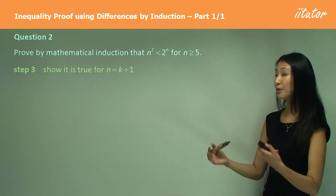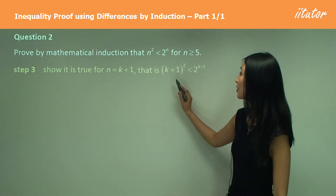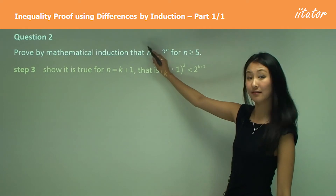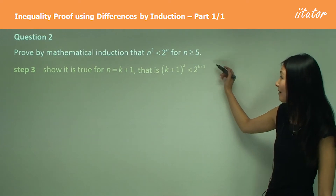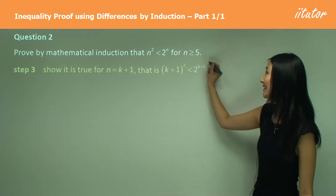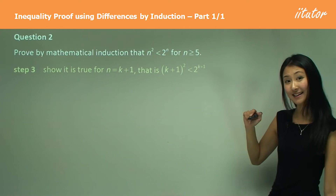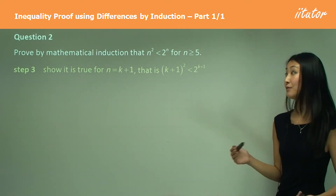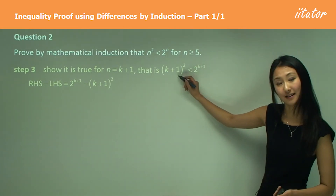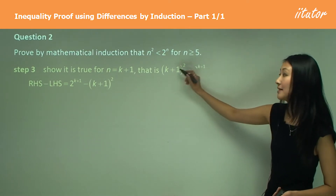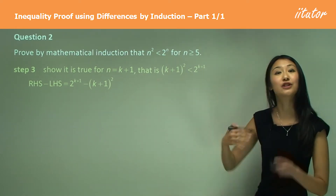Step three is the proving step, where we show it is true for n equals k plus 1. Substituting k plus 1, we have k plus 1 all squared is less than 2 to the power of k plus 1 — this is what we want to prove. Now we're going to use the difference method. We take the right hand side minus the left hand side, and to confirm that the right side is greater, we want to show this difference is positive.